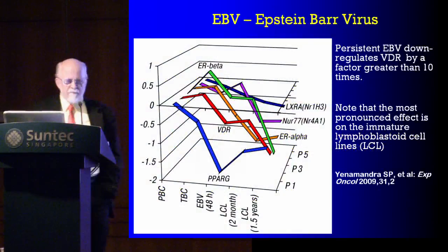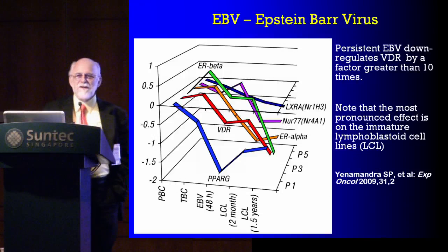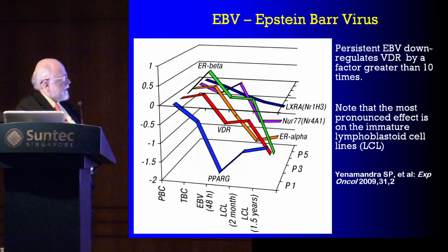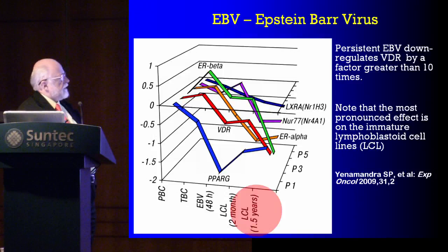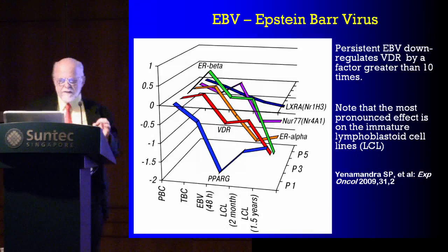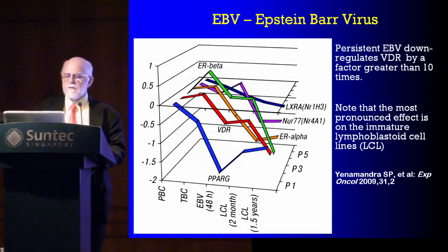Epstein-Barr virus — the virus I think has been associated with more autoimmune disease than any other — also knocks out VDR. A very interesting study from Yunnanamundra showed that EBV knocks out VDR as a function of cell line, and particularly in lymphoblastoid cell lines, the immature cell lines, the VDR is knocked down by about 15 times after one and a half years. That's exactly the behavior a persistent pathogen needs to ensure its persistence.